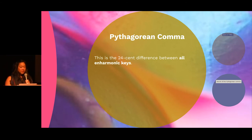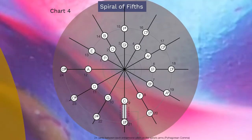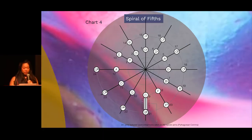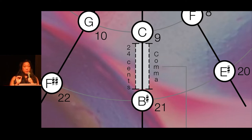This 24-cent difference between all enharmonic keys is known as the Pythagorean comma. We have a fantastic chart here — the spiral of fifths. Both notes on each spiral's arm are the enharmonic note. If you start at C and jump 12 fifths going around that spiral, you will land on B sharp. But that B sharp is 24 cents higher than the C. That is where the Pythagorean comma exists — between each of those notes on every part of the spiral's arm.